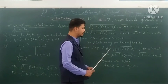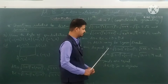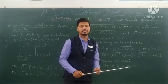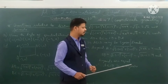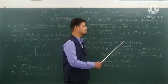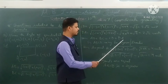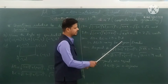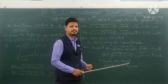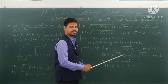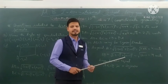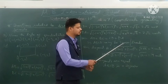Both diagonals AC and BD have equal values of 4 units. Since all four sides are equal and both diagonals are also equal, it is a square. Hence, quadrilateral ABCD is a square.